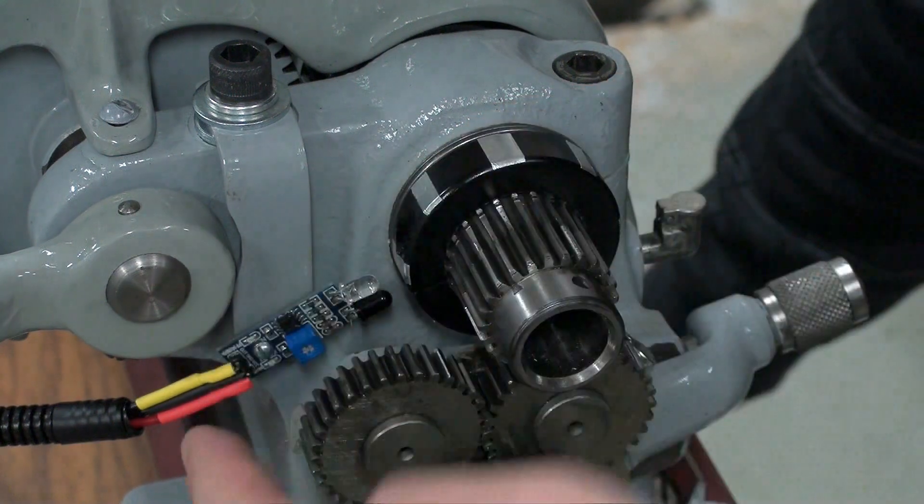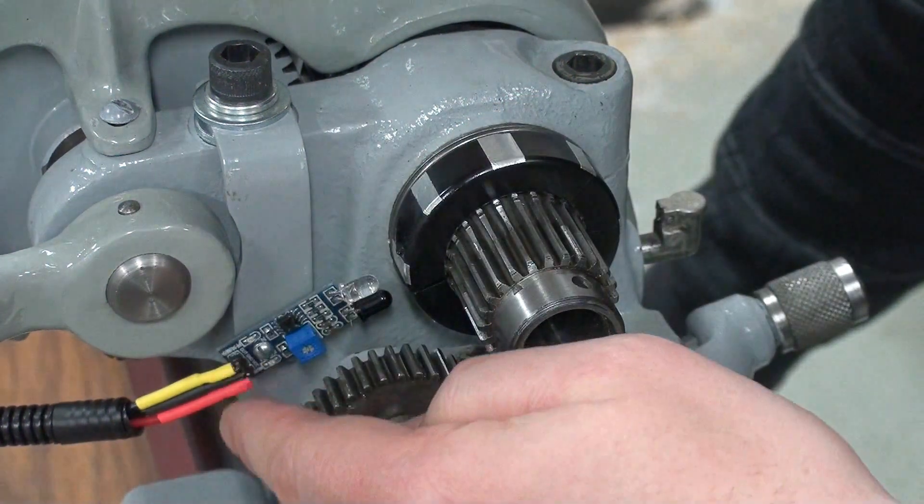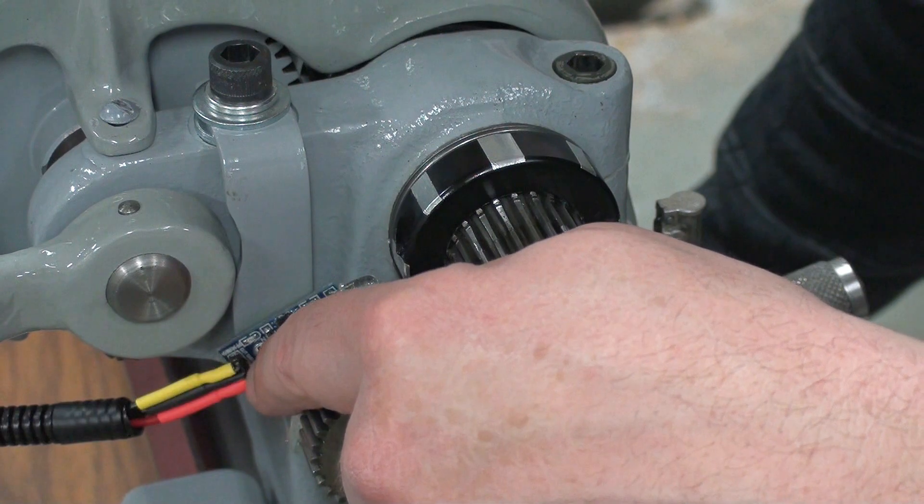It has the sensitivity sensor on here and then the three wires here with the two power wires and the signal wire.